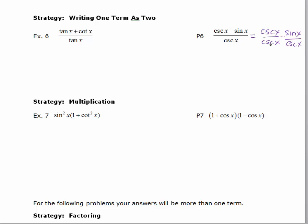So writing it as two terms I get cosecant x over cosecant x minus sine x over cosecant. Again this cancels so I'm going to get 1 minus and I'm going to do a similar step as I did in example 6. I'm going to rewrite the cosecant as its reciprocal which is 1 over sine x.